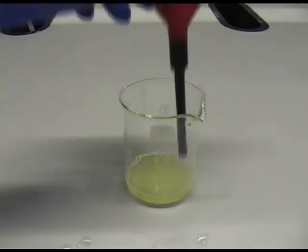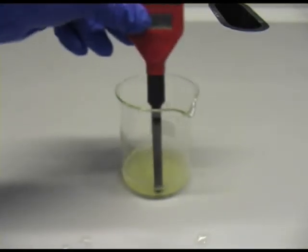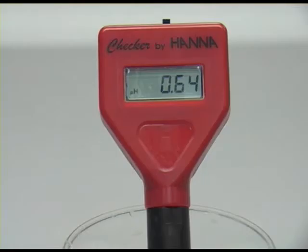In the beaker we have a strongly acidic solution. Once the reading is stabilized we can see that the pH value is between 0.6 and 0.7.